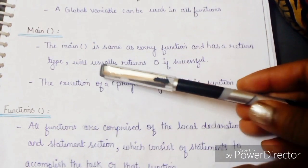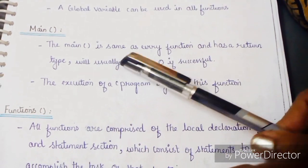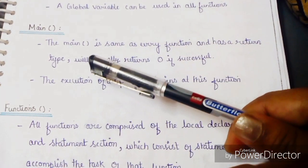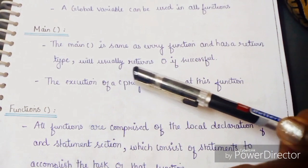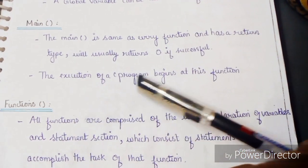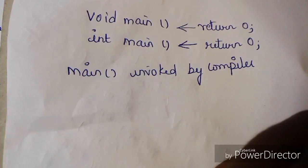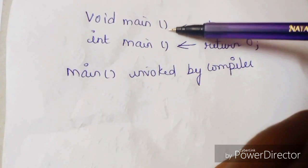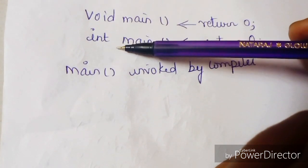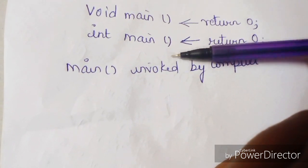The main function is the same as every function and has a return type, which is usually return 0. If successful, execution of the C program begins at this function. A common doubt is the difference between void main, int main, and int main with return 0, which will be used in this function.